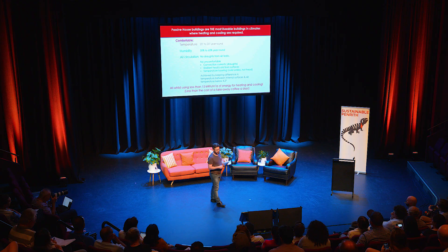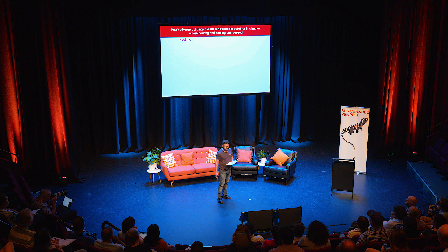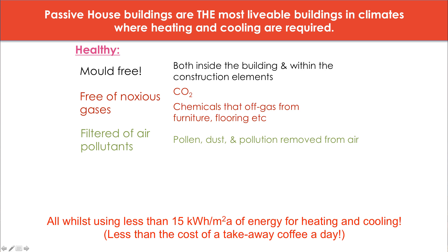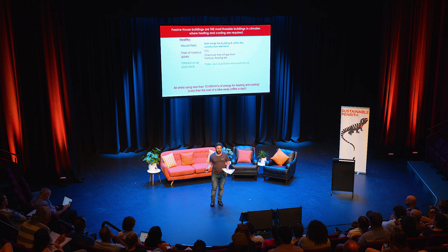From a health perspective, passive houses are mould free — not only in the cavities but in the buildings themselves. Passive houses use a ventilation system to make sure the air is controlled and healthy. This takes the stale air out, which includes the carbon dioxide that we're breathing out, as well as any chemicals that might off-gas from furniture, flooring and the like. We then bring fresh air in from outside and it is filtered, so we remove things like pollen, dust and air pollution. Again, this is whilst using very small amounts of energy for heating and cooling, and indeed very small amounts of energy for running the whole building.